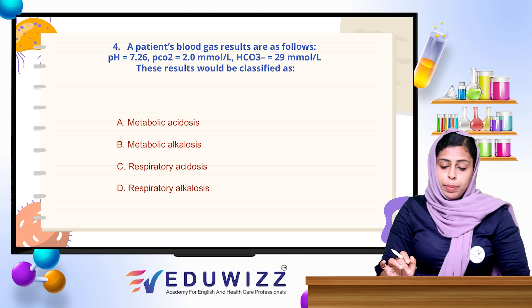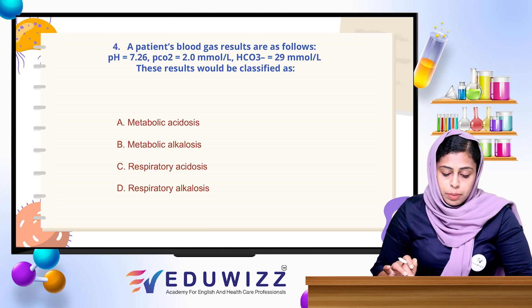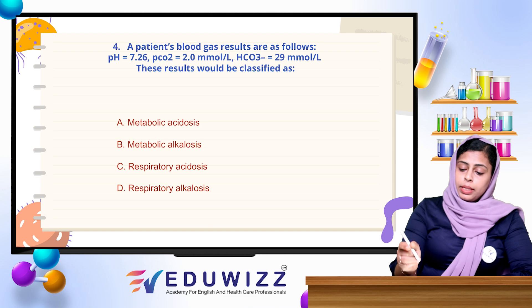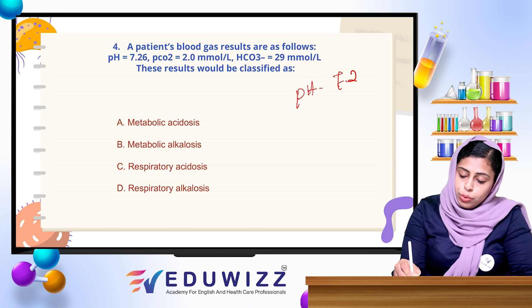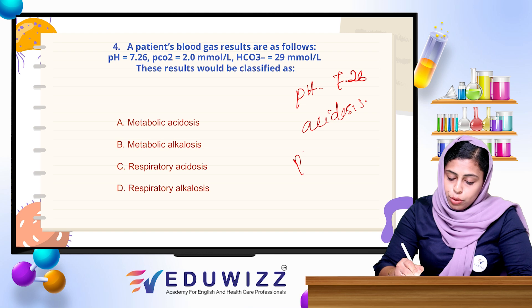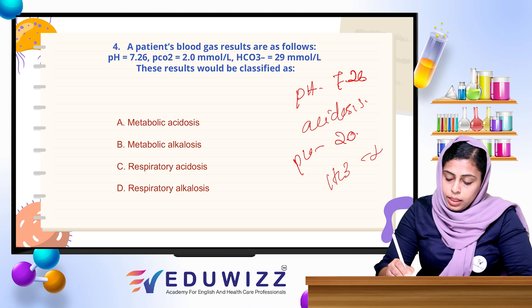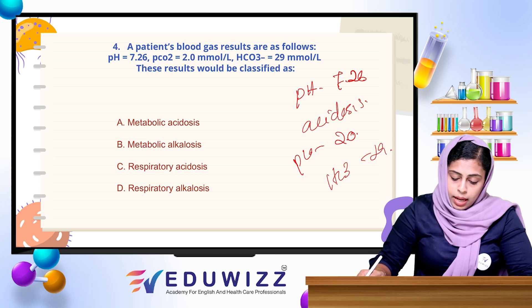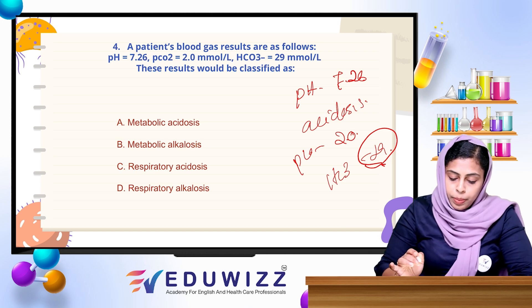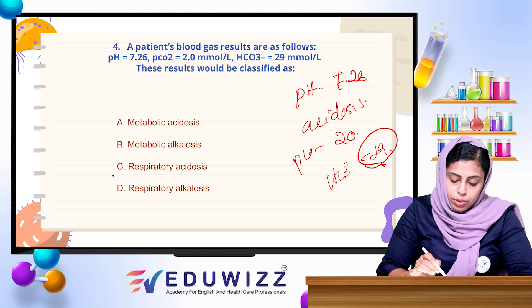Next question: a patient's blood gas results are — pH 7.26, pCO2 2, and HCO3 29. These results will be classified as what? pH 7.26 is an acidosis, an acidic condition. The pCO2 value is 2, which is very low. HCO3 value is 29, which is a normal value. So we can say there is acidosis — respiratory acidosis or metabolic acidosis.